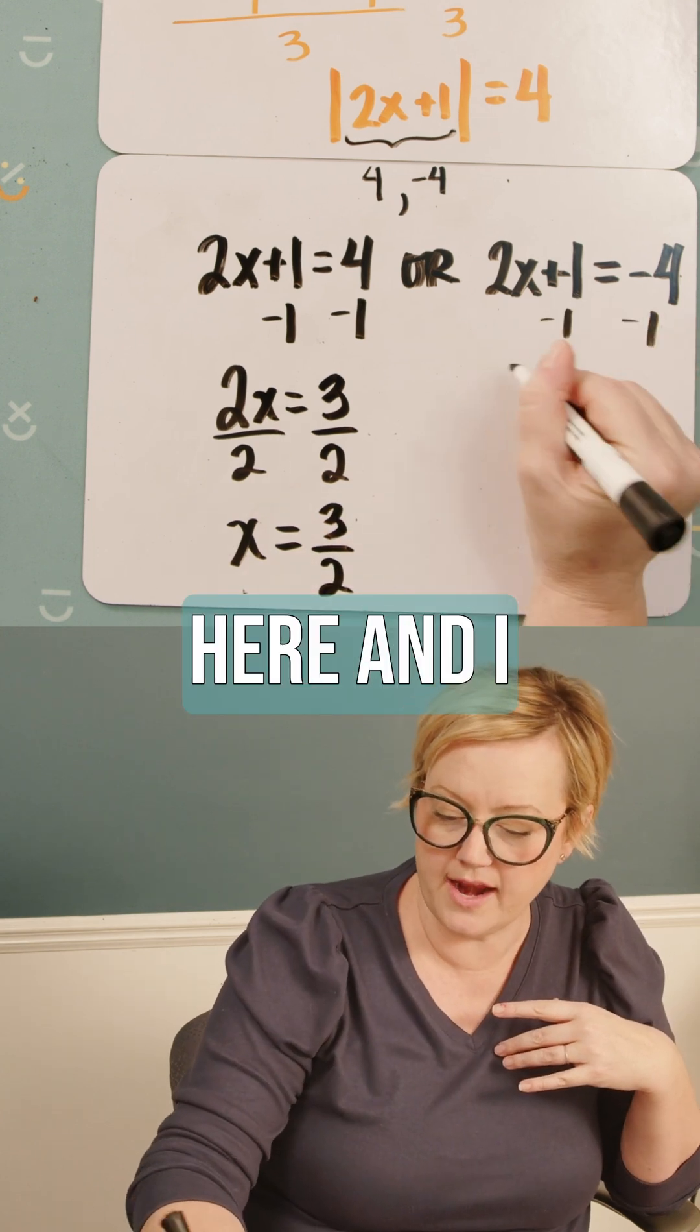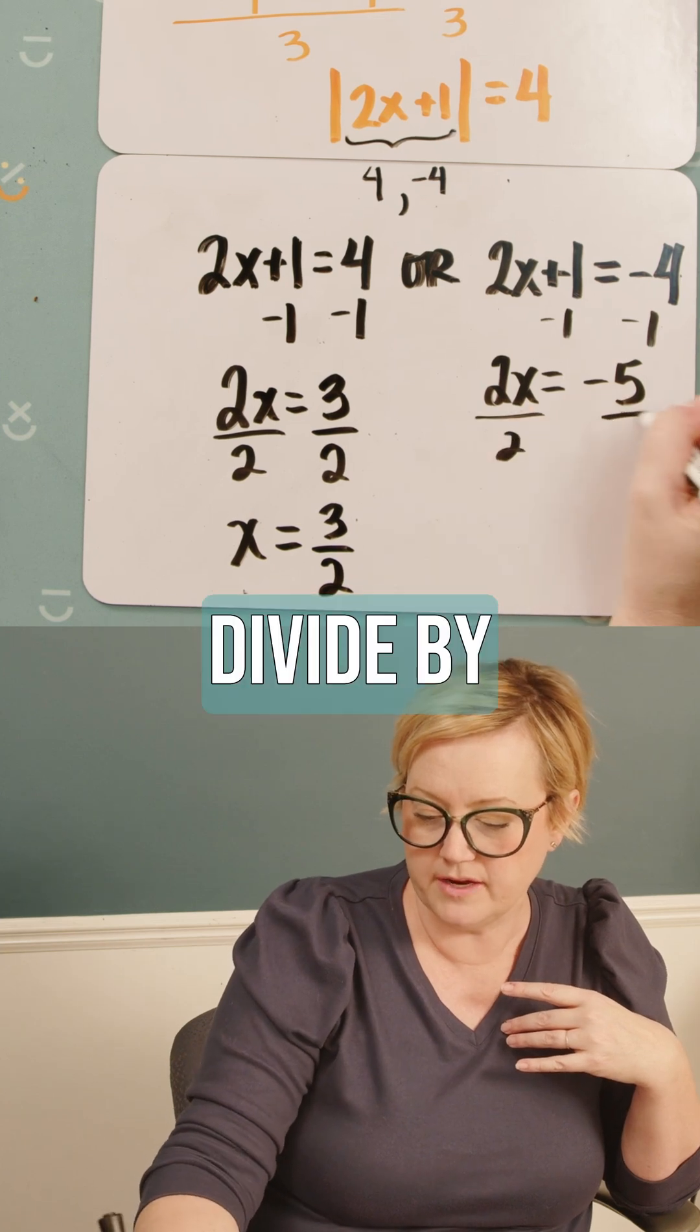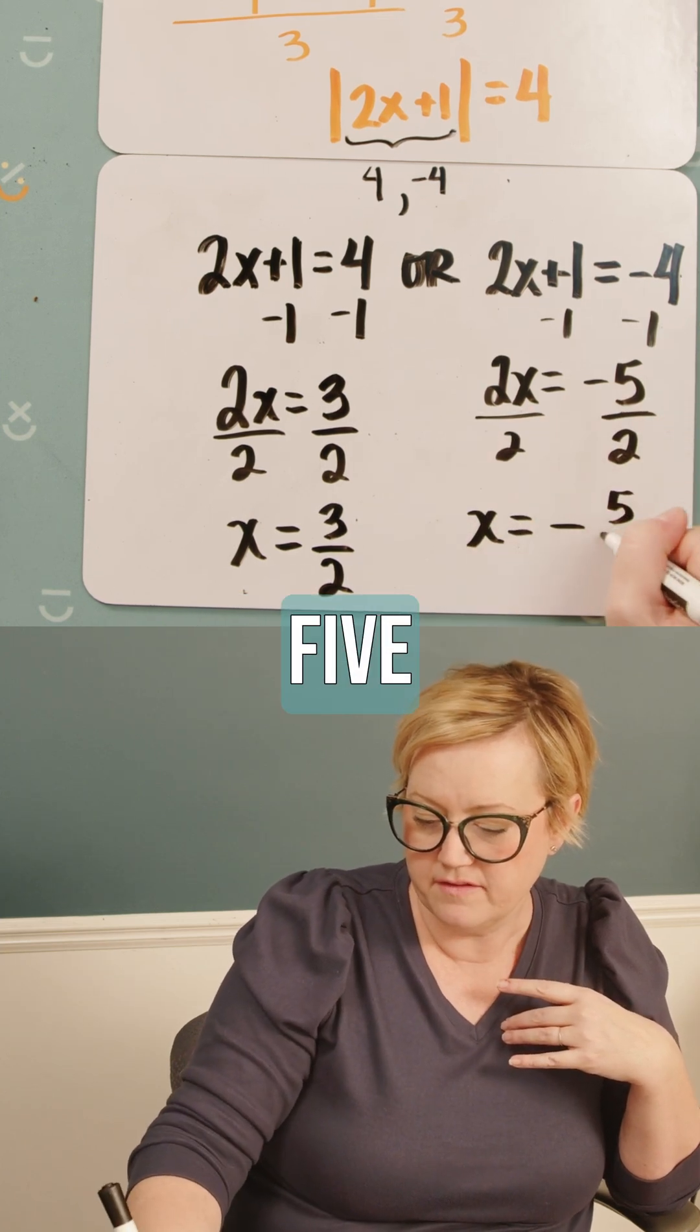I go over here and I get 2x equals negative five, divide by two, divide by two. So I get x equals negative five over two.